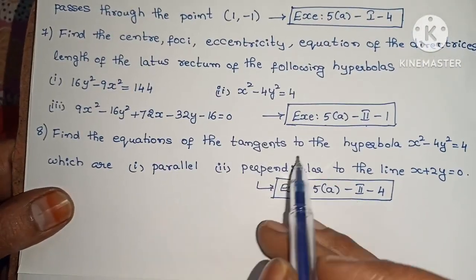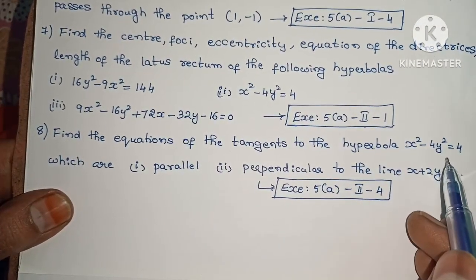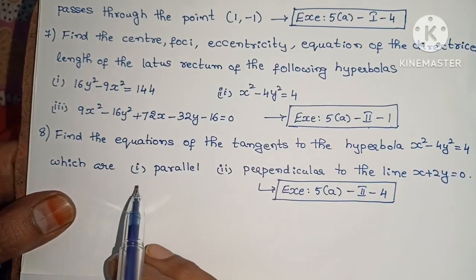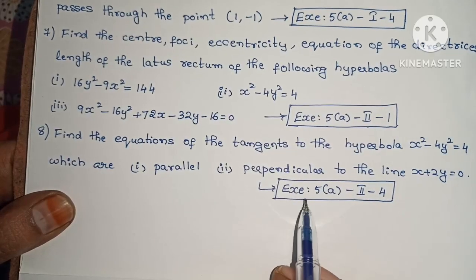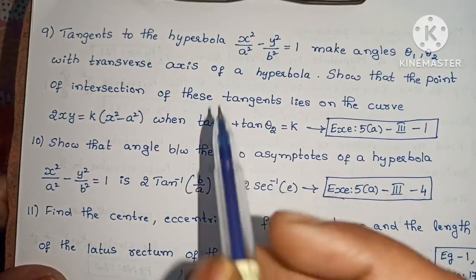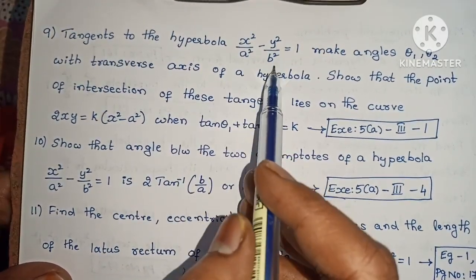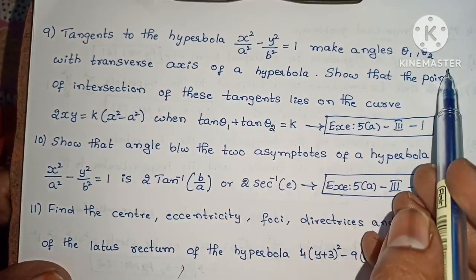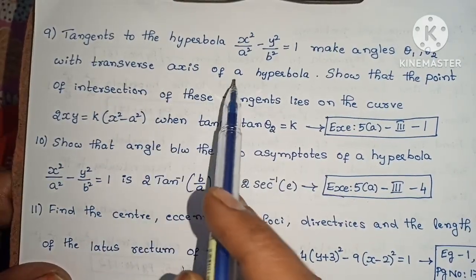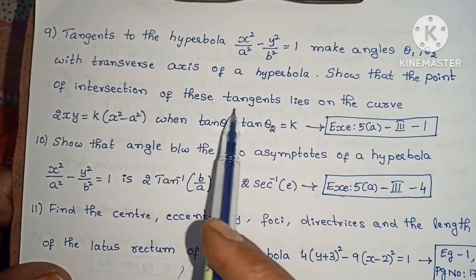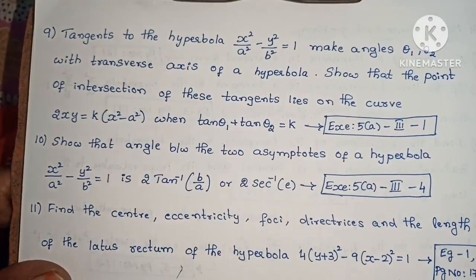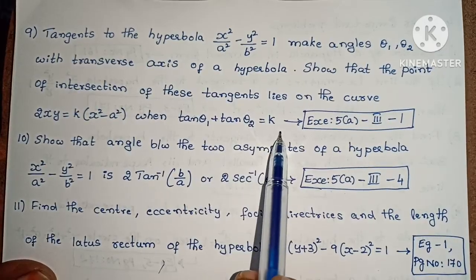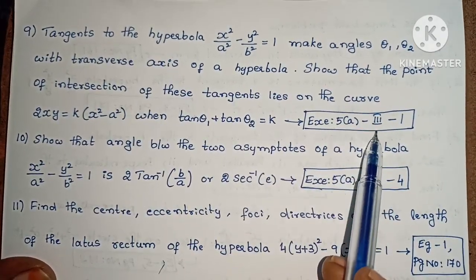Next, find the equations of the tangents to the hyperbola x² − 4y² = 4, which are first parallel and second perpendicular to the line x + 2y = 0. Exercise 5(a), Roman numeral II, problem 4. Next, tangents to the hyperbola x²/a² − y²/b² = 1 make angles θ₁ and θ₂ with the transverse axis, such that the point of intersection of these tangents lies on the curve 2xy = k(x² − a²), when tan θ₁ + tan θ₂ = k. Exercise 5(a), Roman numeral III, problem 1.